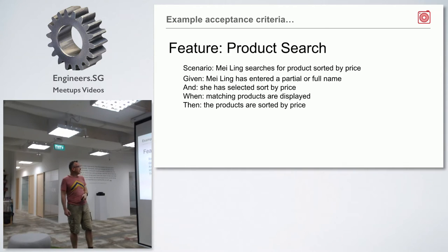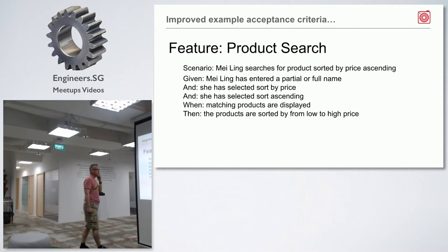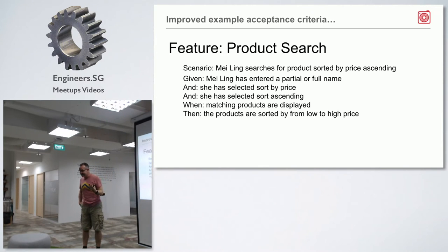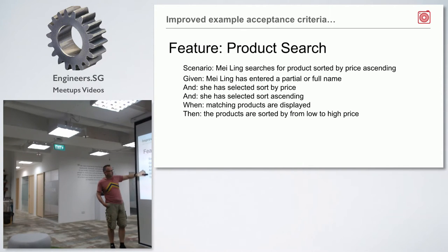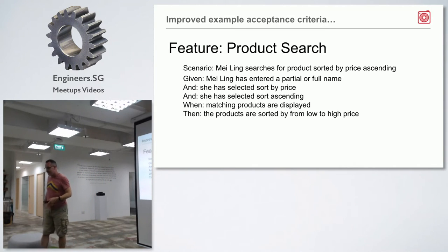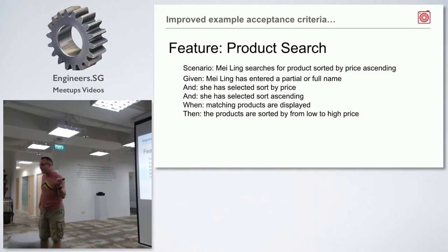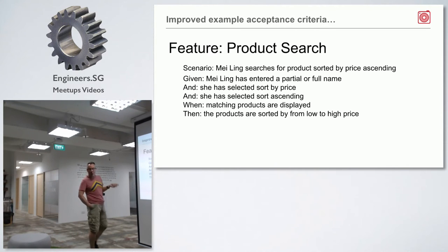Here's a refined version: Maylin searches for products sorted by price ascending. Given Maylin has entered a partial or full name, and she has selected sort by price, and she has selected sort ascending. When matching products are displayed, then the products are sorted from low to high price. That is actually a pretty good acceptance criteria. We could take this same story and come up with dozens of acceptance criteria — price ascending, price descending, and various types of searches.